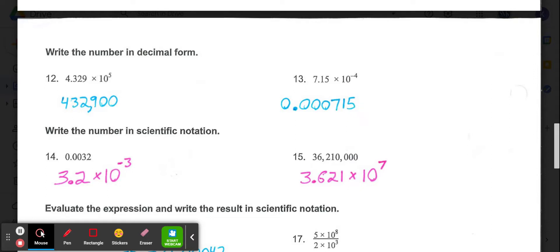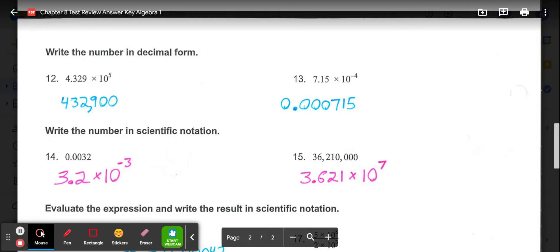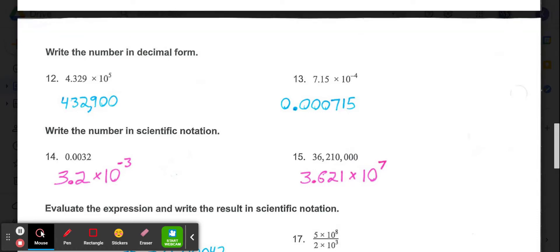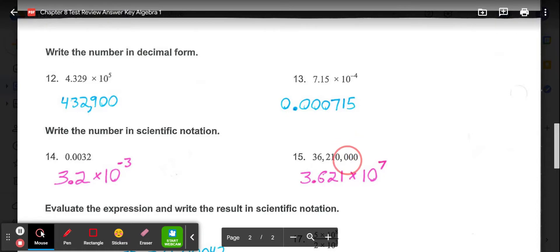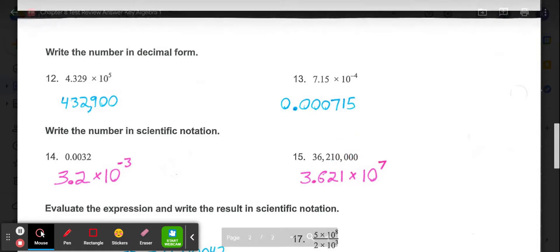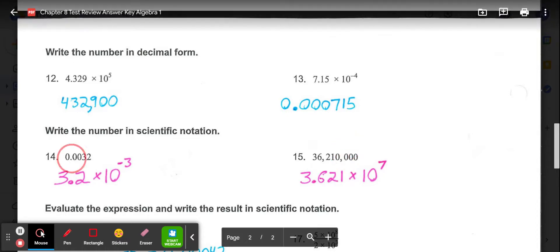Now in 14 and 15, we're taking a decimal and writing it in scientific notation. Remember, the rule is only one number is allowed in front of the decimal point, and you drop any repeated trailing zeros. So in 14, this decimal point would need to move 1, 2, 3 spots to give us 3.2. So to get back to the original, we'd have 3.2 times 10 to the negative 3rd, because that decimal would be going left.